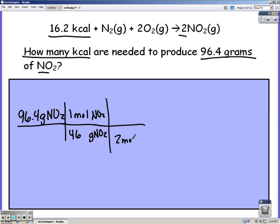Looking at our balanced equation we have two moles of NO2 for every 16.2 kilocalories. We want our answer in kilocalories so multiplying and dividing you get 16.97 or 17 kilocalories.